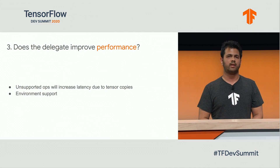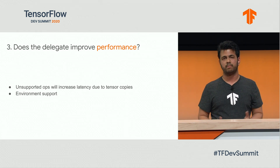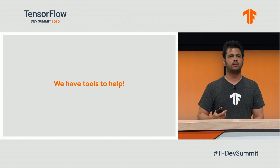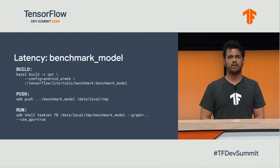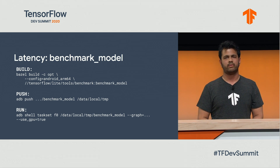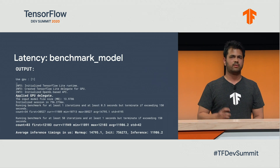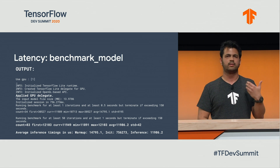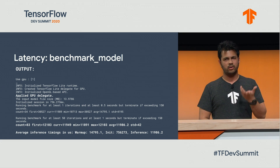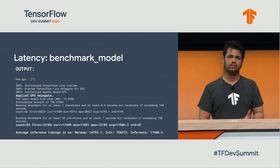Another factor is whether the environment supports the delegate. For example, if you give the Core ML delegate a model on an old iPhone, it might not do you any good. But the good news is that we have some tools to help you figure out which delegate to use in any given environment for your model. We have our benchmark model tool, which is used for latency profiling on Android devices. You basically build the binary using Bazel, and you push it to the device. Then you can run it to get a lot of statistics about latency performance, including CPU memory usage.